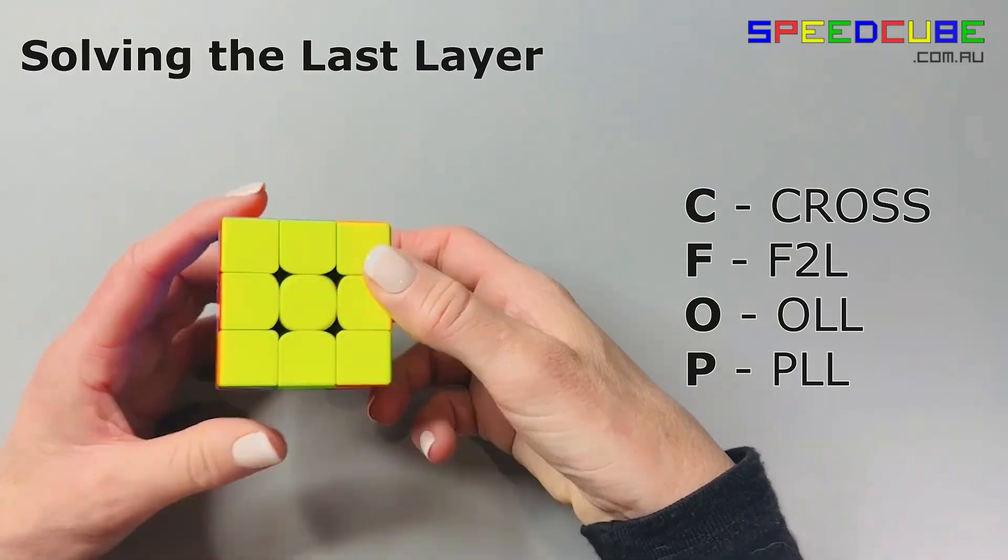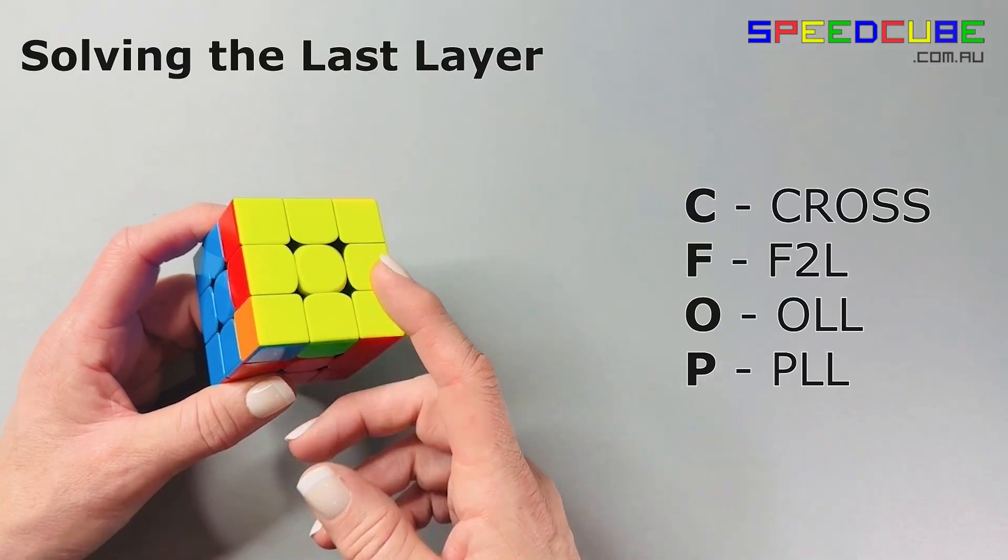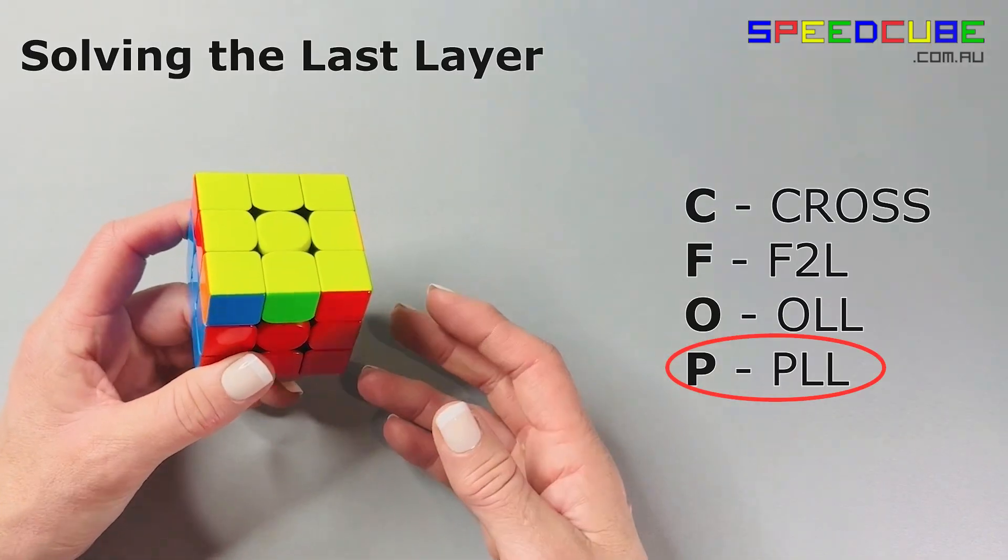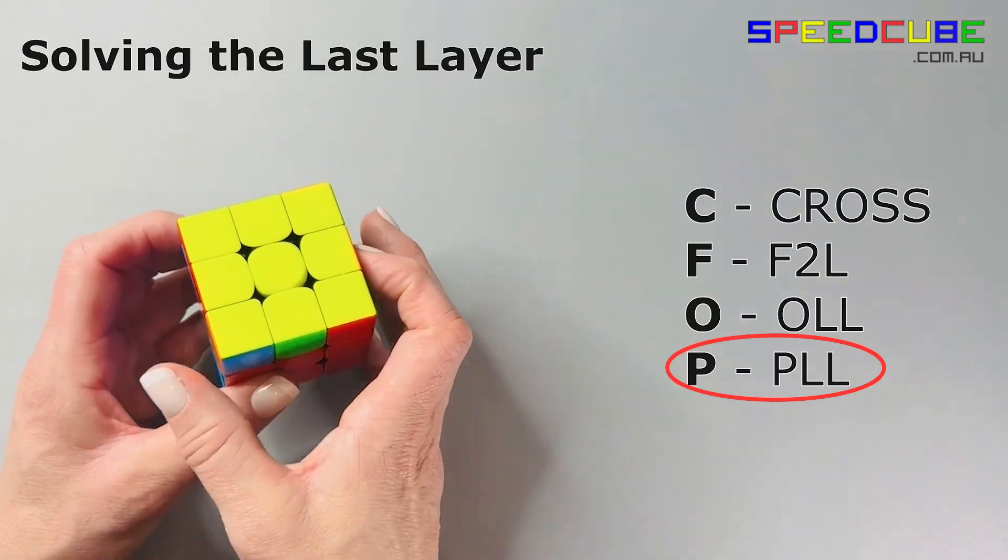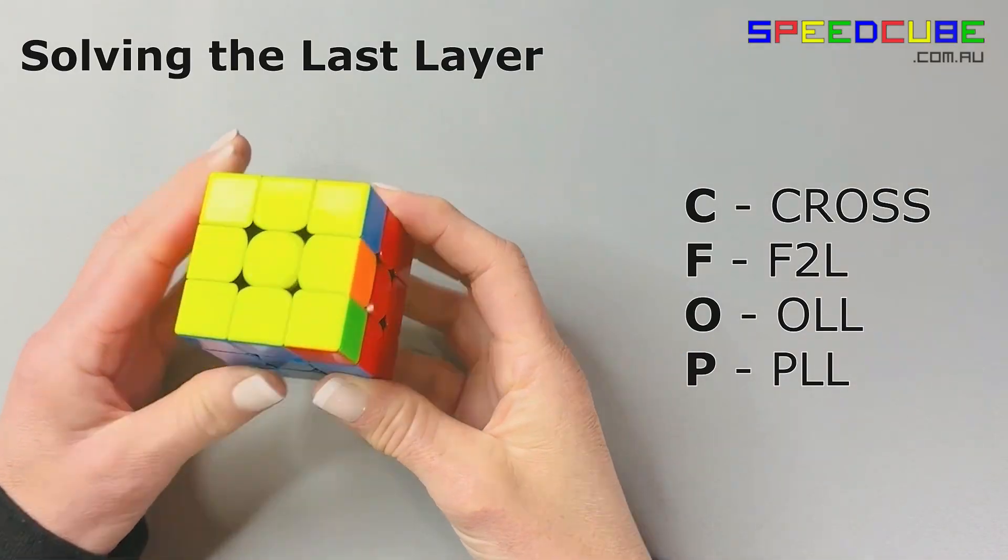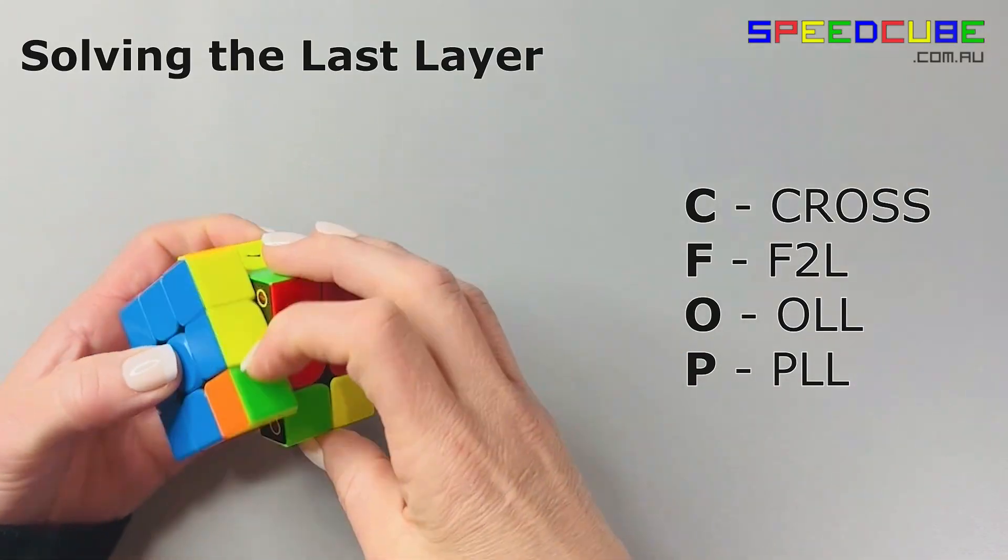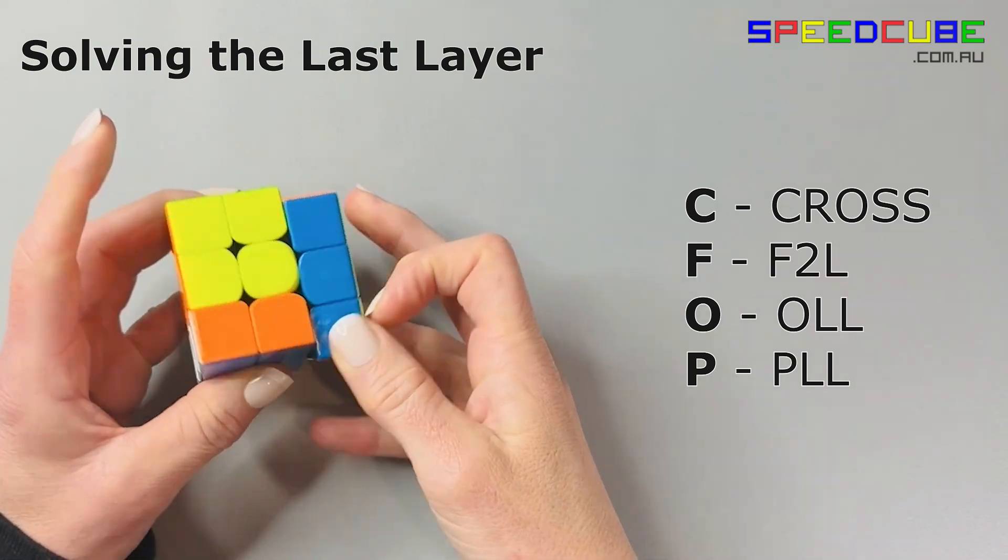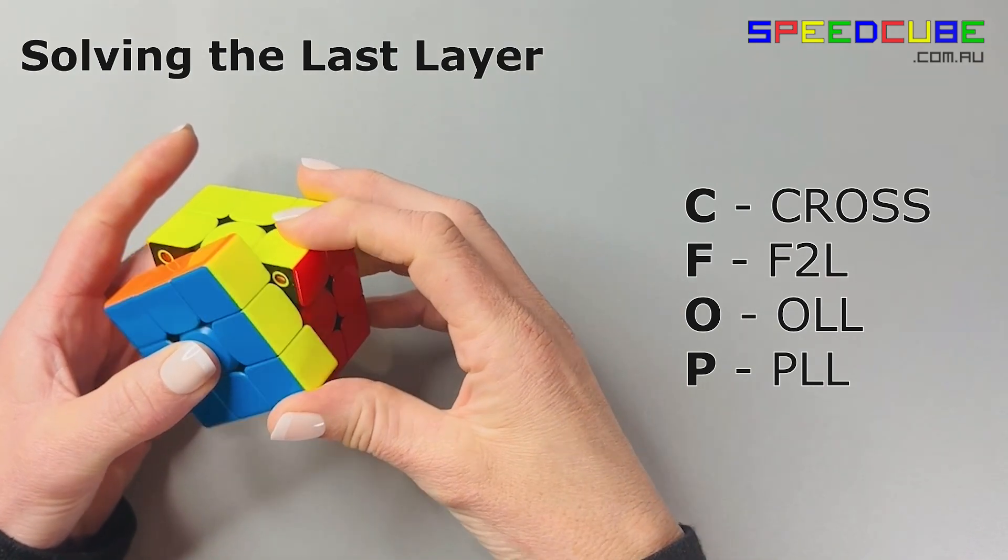Secondly, you can build on that to do PLL where you can learn algorithms to move the corners and the edges at the same time. So hopefully this clarifies how you step up into learning speedcubing or CFOP. Have fun with this concept, guys.